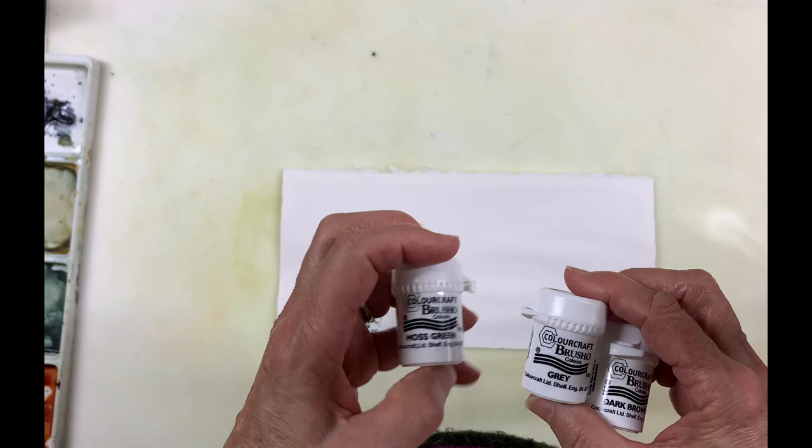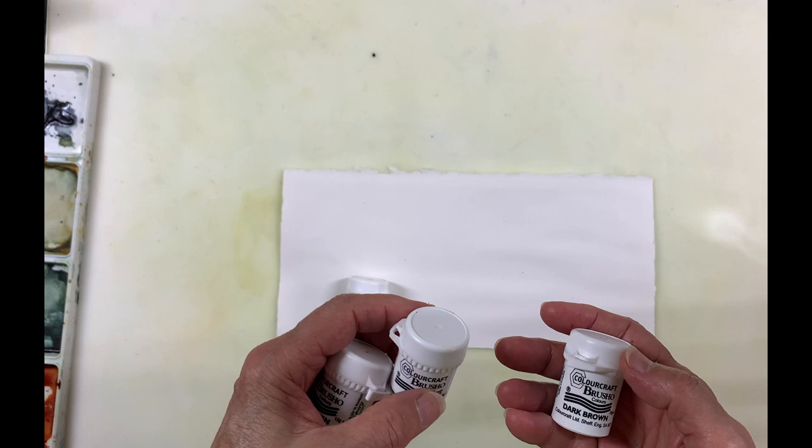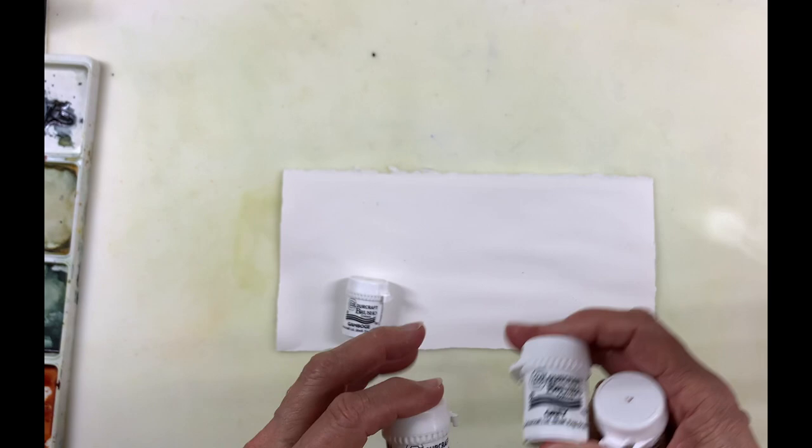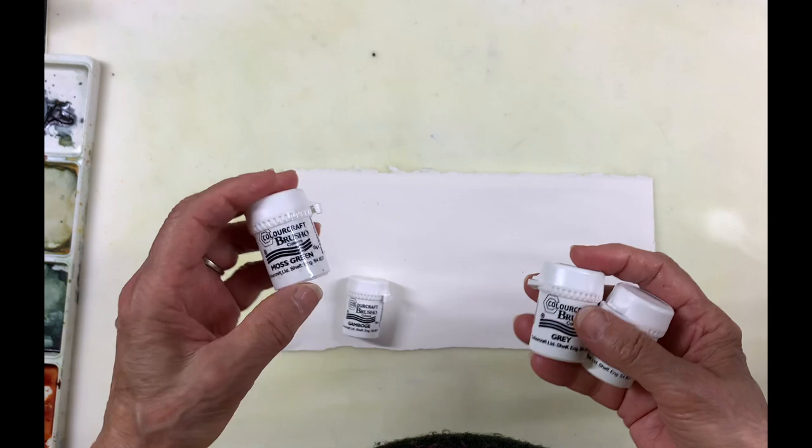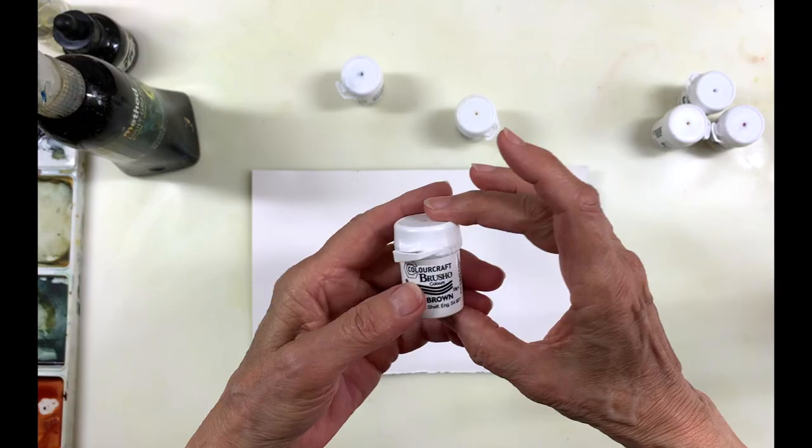The colors that I've chosen are moss green, gray, and dark brown. Now the gray is very interesting because this applies to a lot of the brusho. When you activate them, it doesn't just have a single color, it breaks up into different colors, which could be very useful in the landscape. And I also have gamboge, which just is a nice yellow and not too bright.